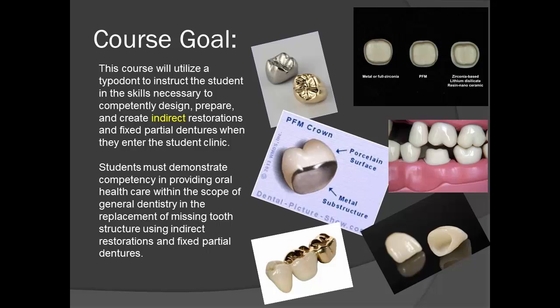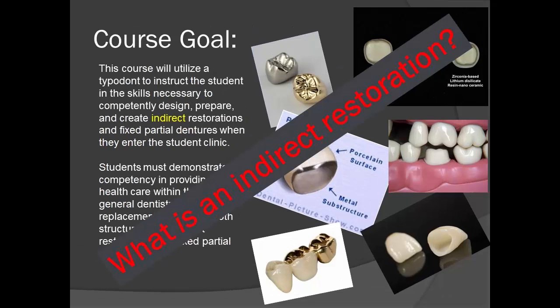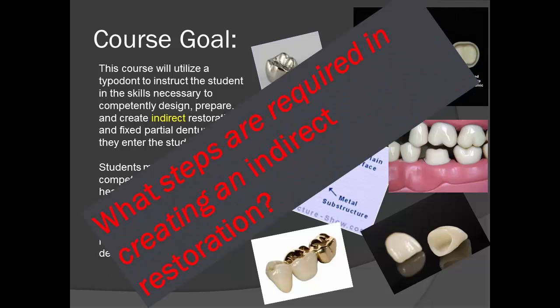The goal of this course is to instruct the students using a typodont in the skills required to restore teeth in the patient clinic using indirect restorations. What is an indirect restoration? An indirect restoration is one that is fabricated outside the mouth and then cemented in place. What steps are required in creating an indirect restoration? All of these steps, the preparation of the tooth, taking of impressions, temporizing the tooth, making the restoration, cementing it, and adjusting it after cementation will be covered.